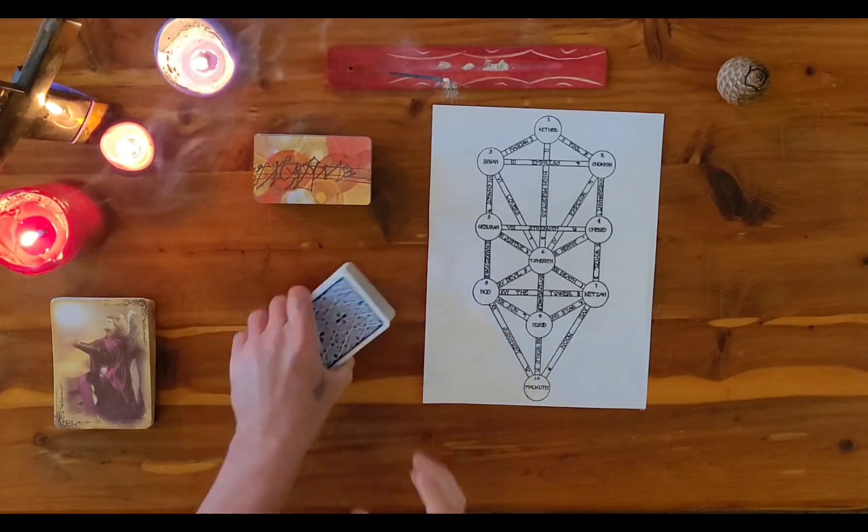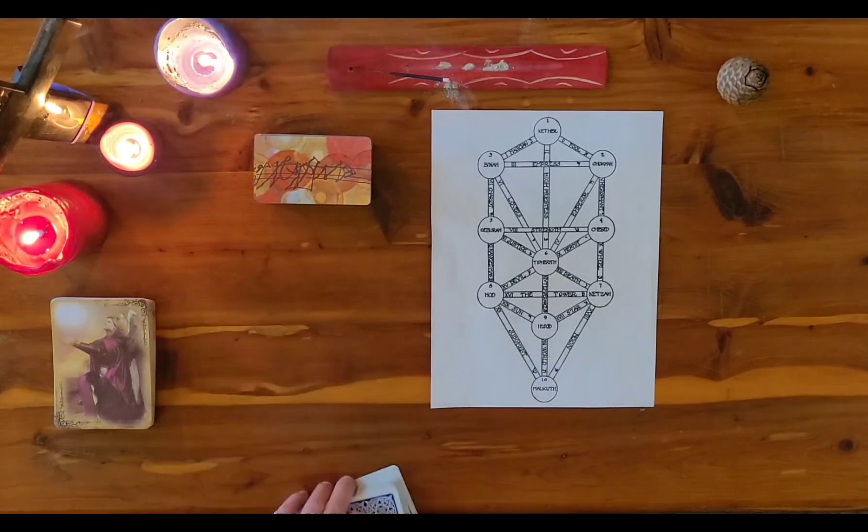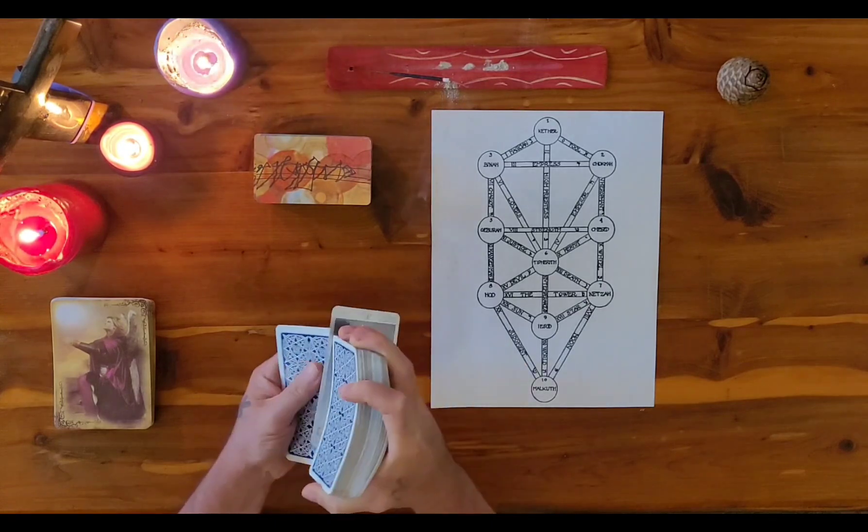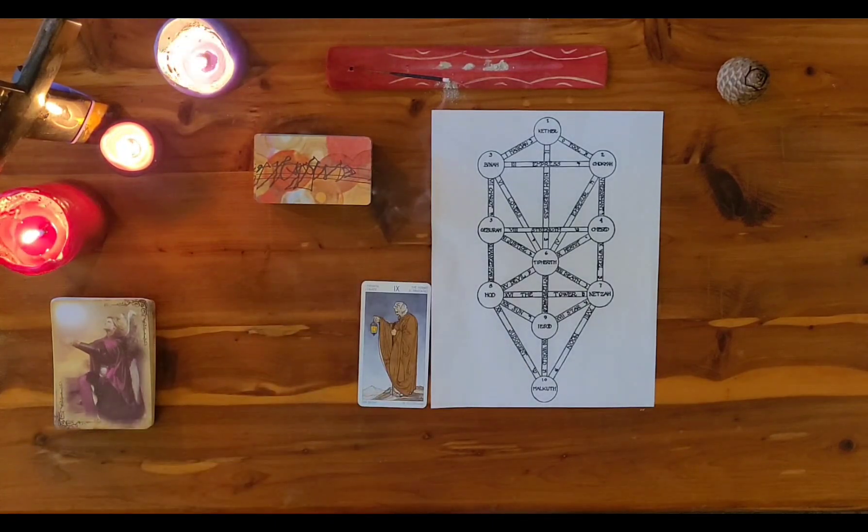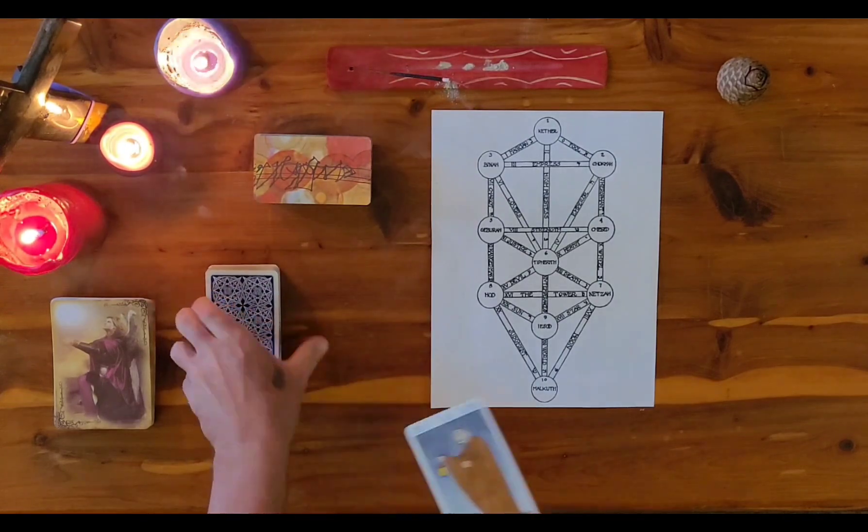All right, we'll cut the deck and then we will ask Spirit for some guidance here, Capricorn. Spirit, what kind of guidance do you have? A single card. Oh, look at that. Came right out. And what we have here, Capricorn, we have the Hermit.